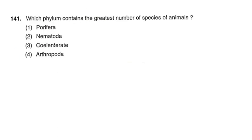Next question: Which phylum contains the greatest number of species of animals? Options: Porifera; Nematoda; Cnidaria; Arthropoda. The correct option is option number 4: Arthropoda.